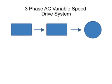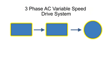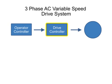This block diagram illustration depicts a typical three-phase AC variable speed drive system. It has three main components: an operator control, a drive controller, and an AC motor.